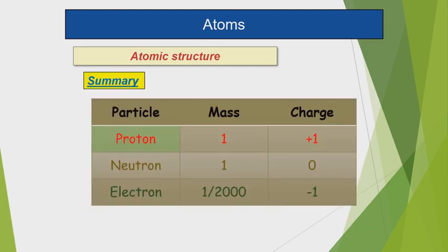Particle properties: Proton has mass 1 and charge +1. Neutron has mass 1 and charge 0. Electron has mass 1/2000 and charge −1.